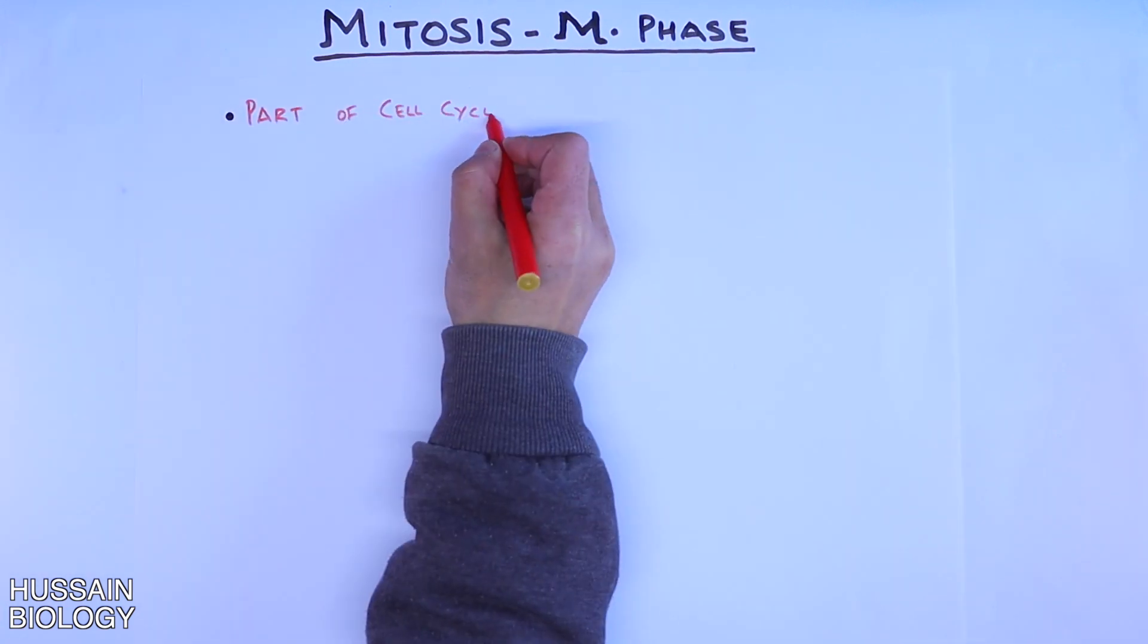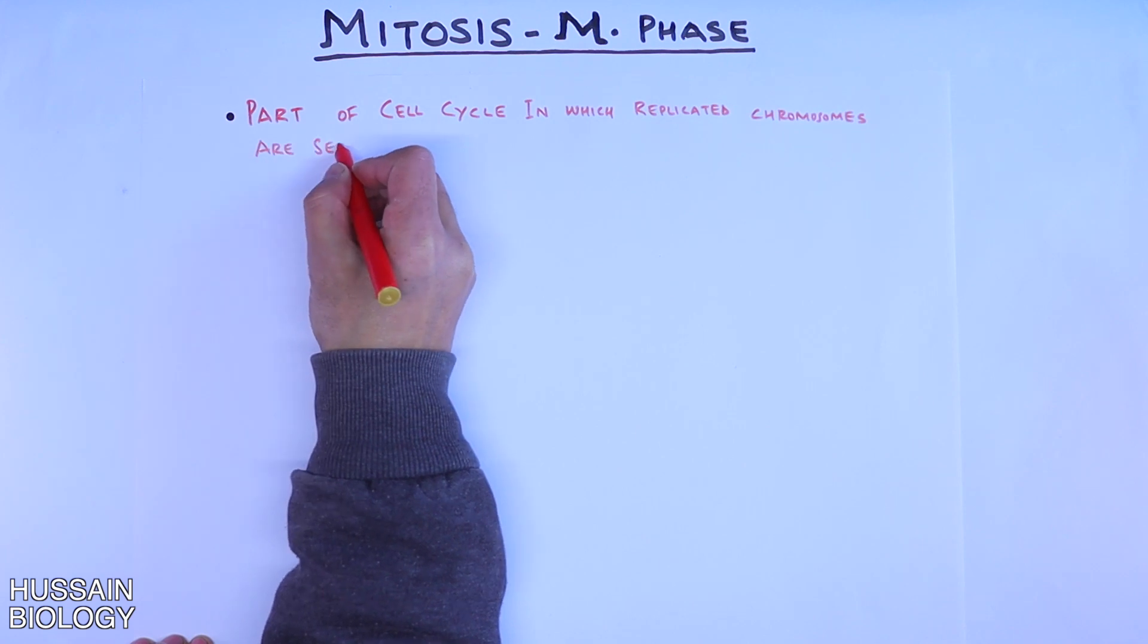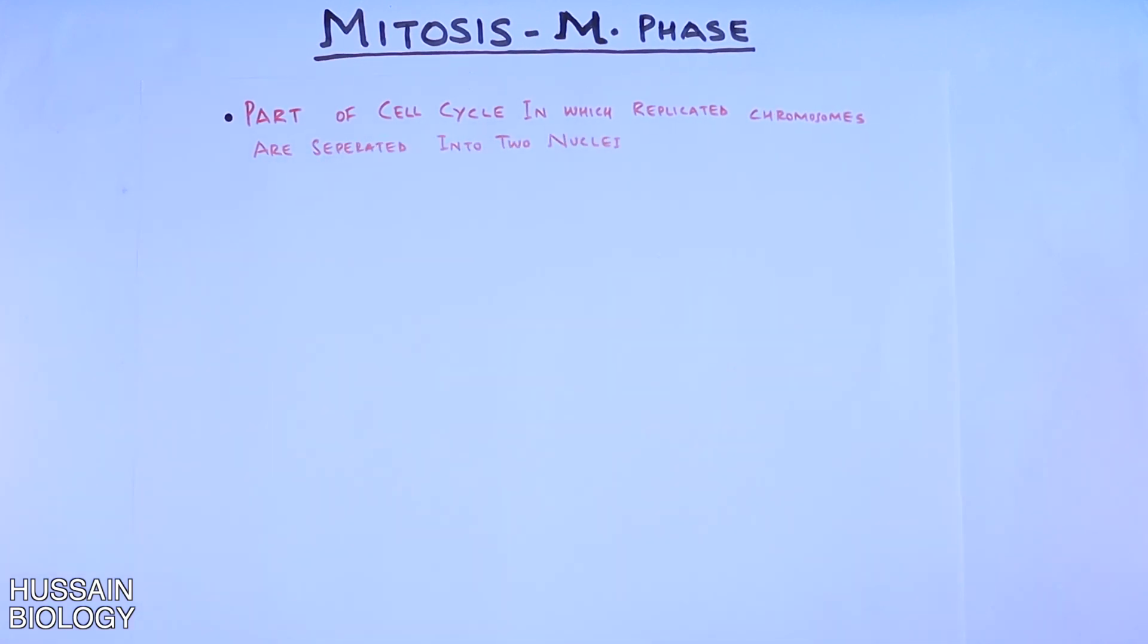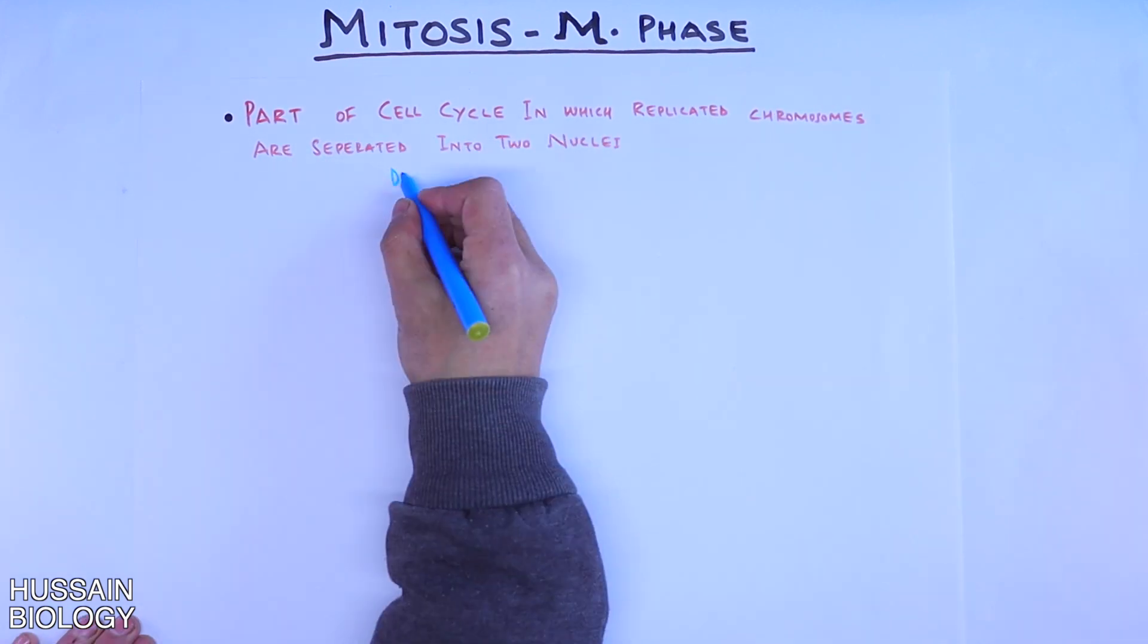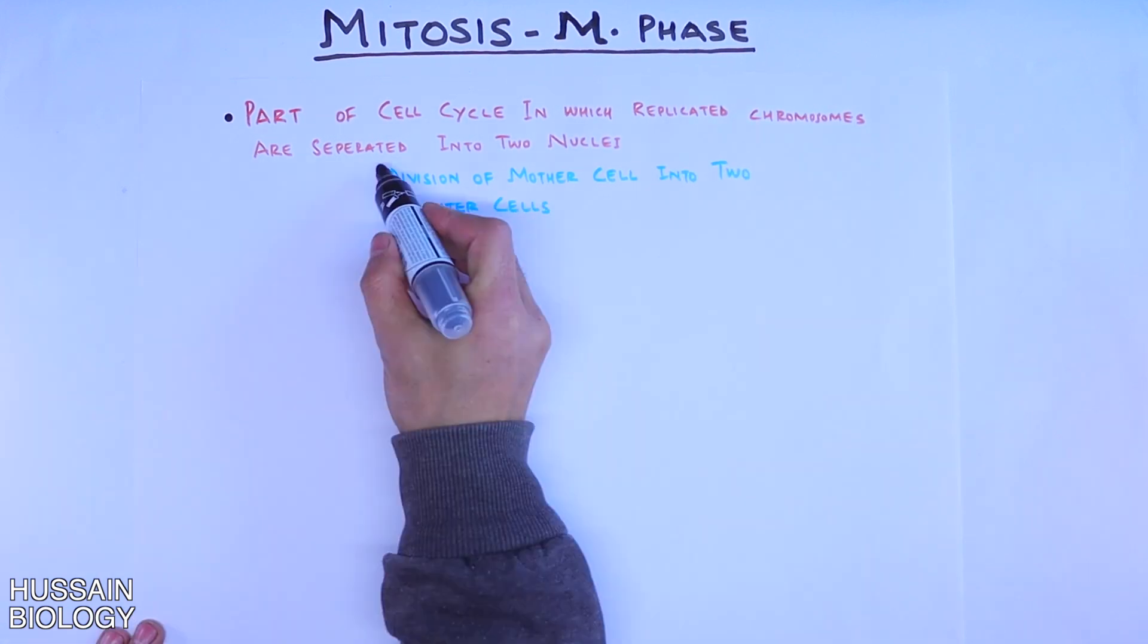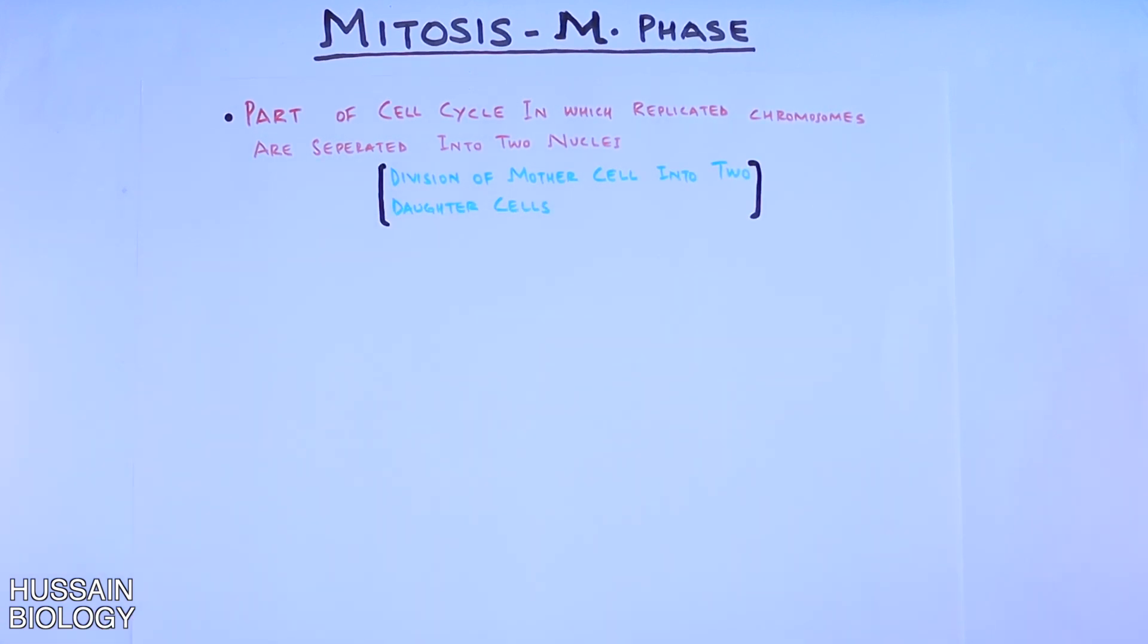It is a part of the cell cycle in which replicated chromosomes are separated into two daughter cells. In simple words, the division of the mother cell into two daughter cells.